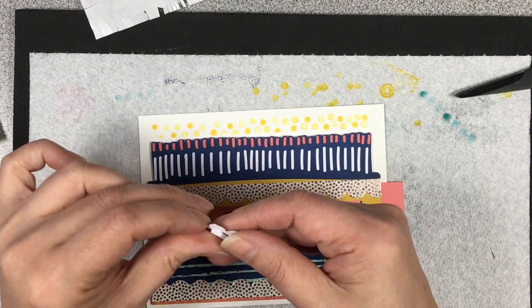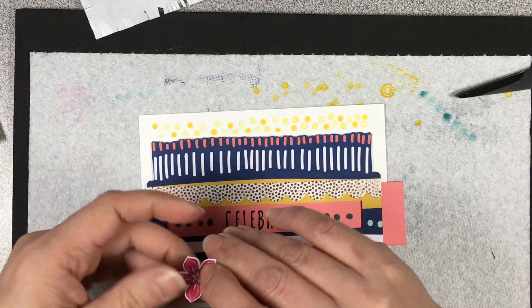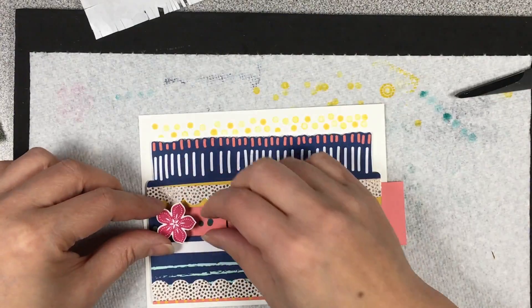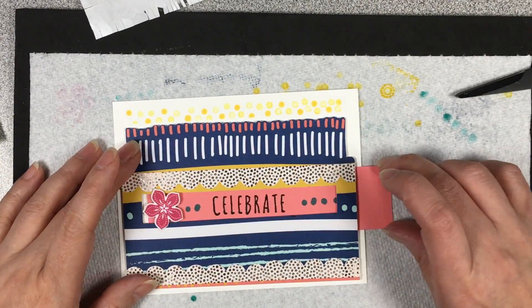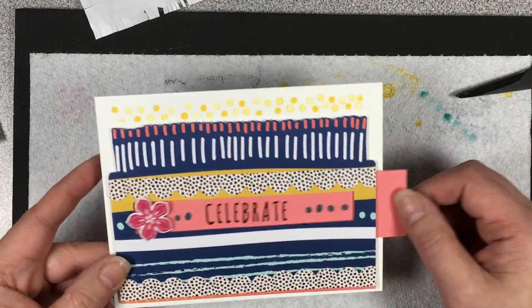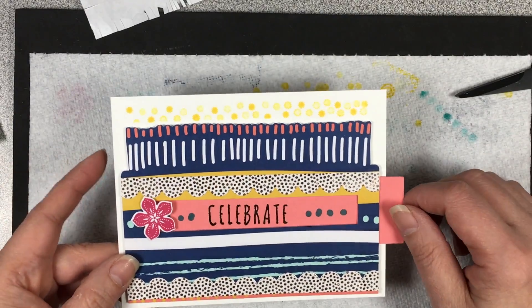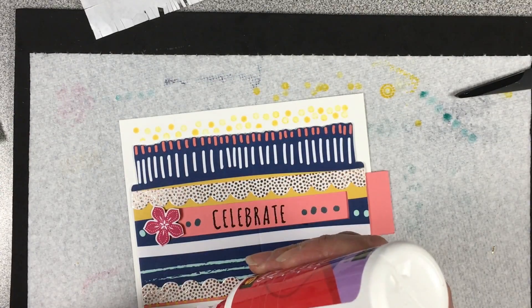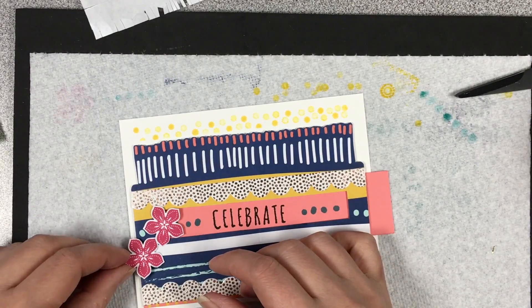I did do this off screen just to save some time. We're just going to pop that up with some dimensionals on the left side of the Flirty Flamingo card panel, and then the other two we're just going to stick just below that flower.